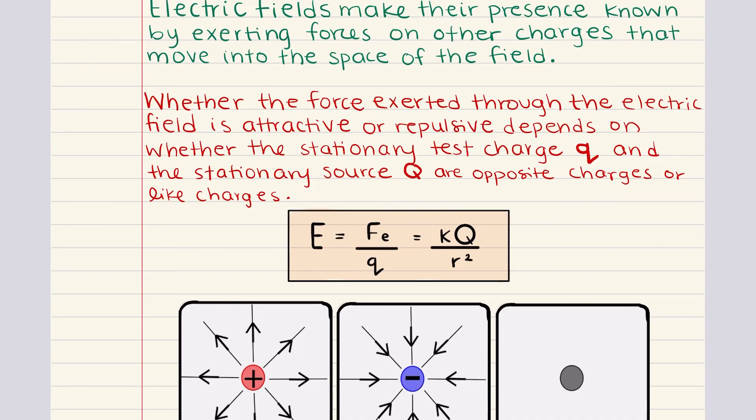And this depends on the relationship between the stationary source charge denoted as capital Q and the test charge denoted as lowercase q. If the two charges are of opposite sign, then the force is going to be attractive, drawing the test charge towards the source. If the charges are the same though, the force will be repulsive, pushing the test charge away from the source.